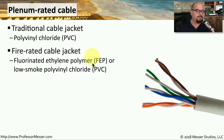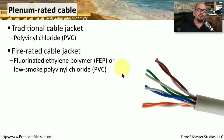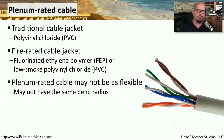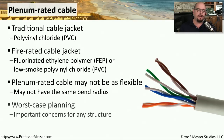The jacket on the outside of a network cable is traditionally made of PVC — polyvinyl chloride — and if it catches on fire, there could be toxic fumes. So if you're running cable inside of a plenum, you'll want to use a plenum-rated cable. This is a fire-rated cable jacket made of either FEP (fluorinated ethylene polymer) or low-smoke polyvinyl chloride. Plenum-rated cable may not be as flexible as traditional PVC cable, so you have to think about routing in tight areas, but the important thing is having the proper safety precautions in place and using the right cabling depending on where it's going.